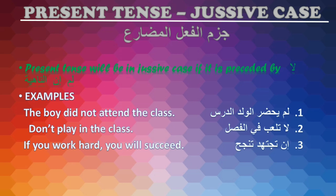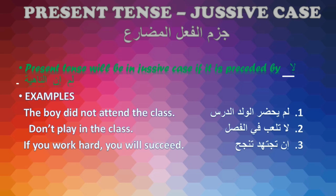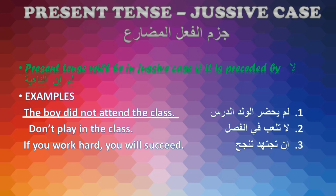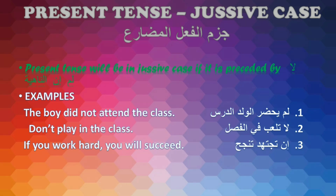Next, present tense jussive case, jazm al-fil muzari. Present tense will be in jussive case if it is preceded by La, Lam, In, or La Nahiyya. For example, Lam yahdur al-waladu al-darsa — The boy did not attend the class. 'Lam' is Huruf ul-Jazim and 'yahdur' is fil-ul muzari majzoom. Next word 'La': La tal'ab fil-fasli — Don't play in the class. 'La' is Huruf ul-Jazim and 'tal'ab' is fil-ul muzari majzoom. Third word 'In': In tajtahid tanjah — If you work hard, you will succeed. 'In' is Huruf ul-Jazim and 'tajtahid' is fil-ul muzari majzoom.